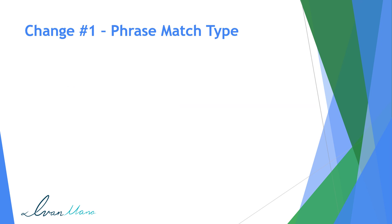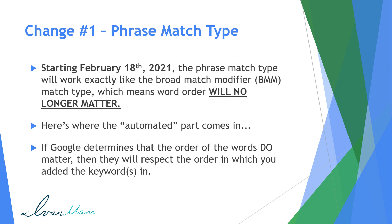But the goal is that Google wants to respect the order of the words in the keyword where it matters. So hopefully that makes sense for the phrase match type changes. One: the order now matters. And two: they are going to respect the order of the words.